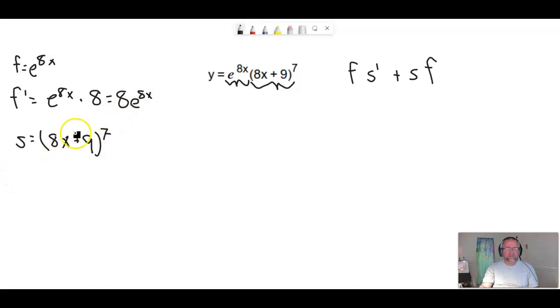Now the second function here, this is also a composite function, just like the first function. That means there's one function inside, nested inside another function. In this case, the 8x was nested inside the e to the u there. So here we have something we can call this 8x plus 9u raised to the 7th power.